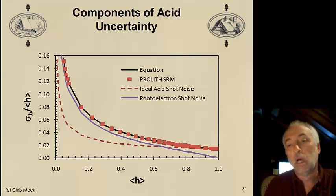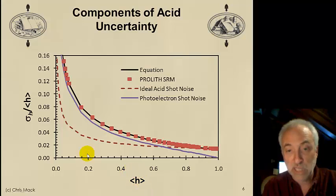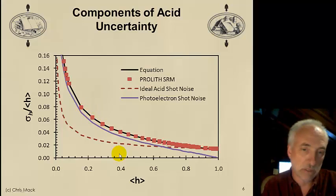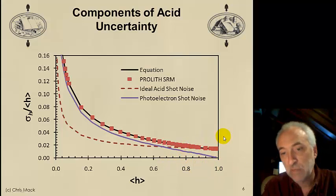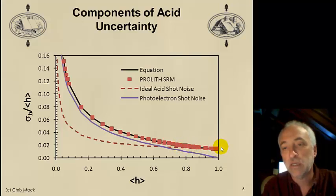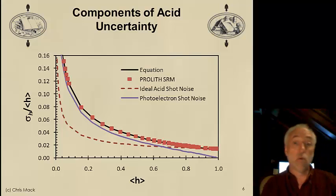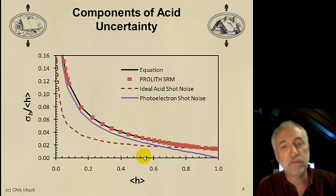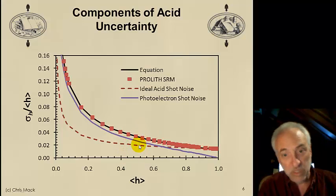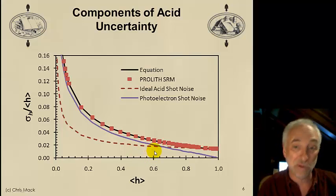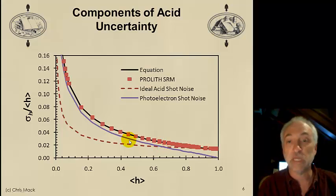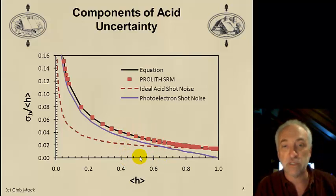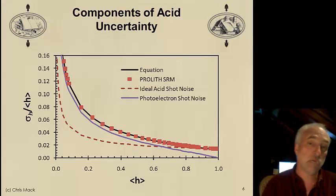I add these two terms in quadrature to get the total black-line uncertainty. For low exposure doses — where acid concentration is low — I am dominated by the photoelectron shot noise. For high exposure doses, I become dominated by the PAG shot noise. In general, we'll mostly be in a regime where about 50% of the PAG gets converted to acid. At that crossover point, each term contributes equally to uncertainty. The range of 40–60% acid generation is the normal lithographic regime, and both terms contribute.